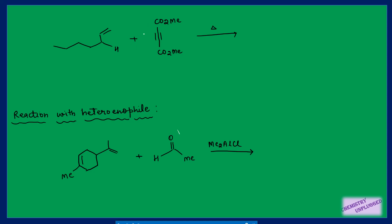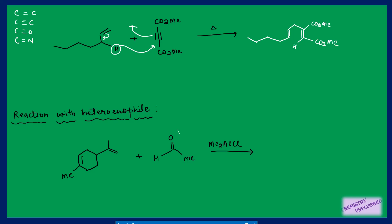A triple bond can also act as an enophile. We can take different types: carbon-carbon double bond, carbon-carbon triple bond, carbon-carbon-double bond-oxygen, and carbon-double bond-oxygen — all can act as enophile. The first step is transfer of the proton to the enophilic carbon, then the bond shifts. Both the co2Me groups go on the same side, giving the outcome of the reaction.